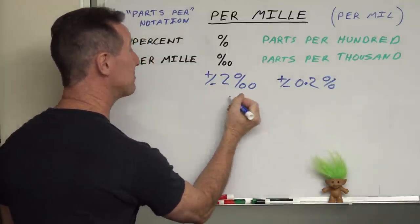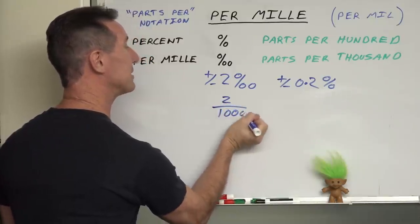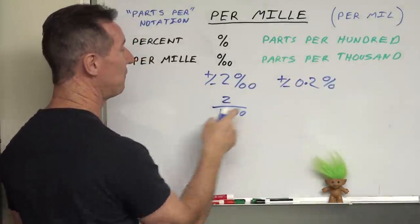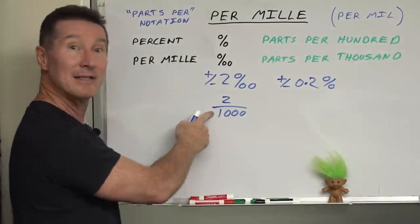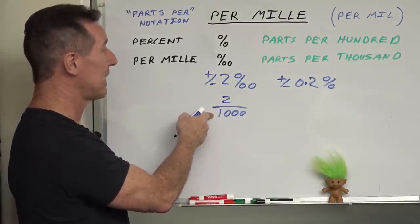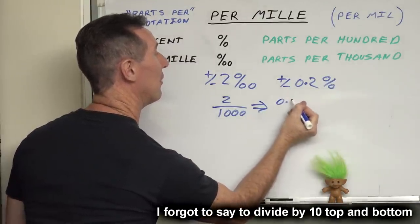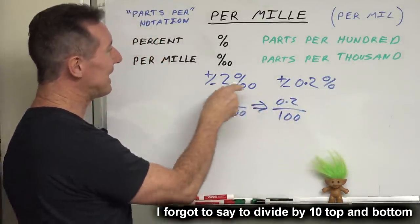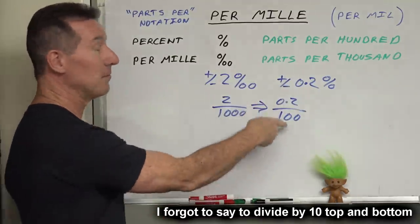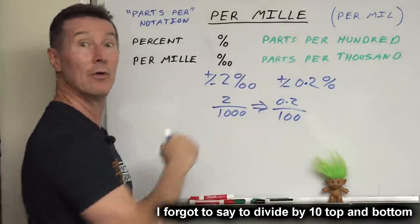So plus minus two on one thousand, because it's parts per thousand. So it's two parts per thousand like this. And that is equivalent to naught point two on one hundred. So that's how you get your point two percent, because it's parts per hundred.